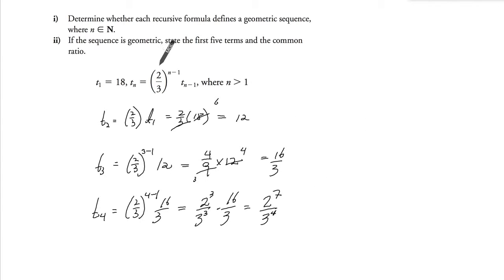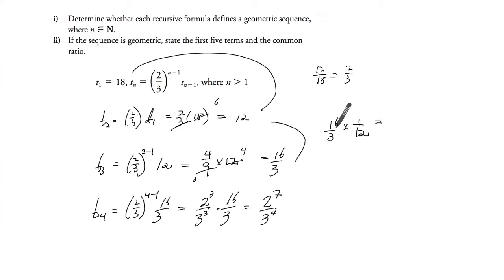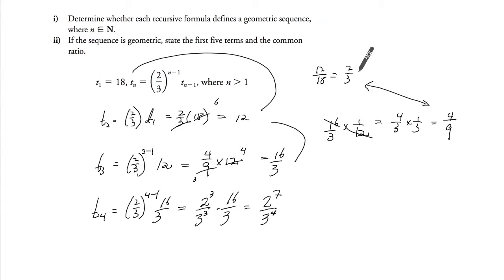The common ratio from t1 to t2 is 12/18. Divide the top and bottom by 2, and you get 2/3. From t2 to t3: 16/3 divided by 12 — which is the same as times by the reciprocal. Reduce the top and bottom by 4, and you get 4/3 times 1/3, which gives 4/9. That's not the same — they have to be the same to be a geometric sequence.